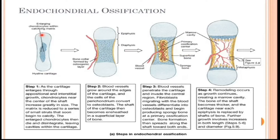Here in this diagram you can see that within the cartilage, the chondrocytes from the central part become enlarged, make spaces within the cartilage, and then die.